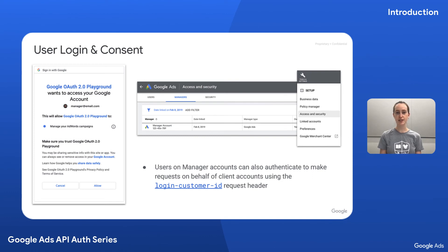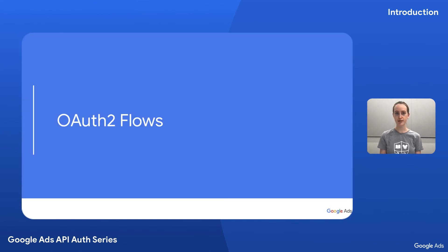Similarly, if the user you authenticate as is a user on an account that is a manager of that client account, that access token can also make requests on behalf of that client account using the login customer ID request header. Now that we understand the basic flow of OAuth and how to use it to make requests with the Google Ads API, let's look at the different OAuth flows available.